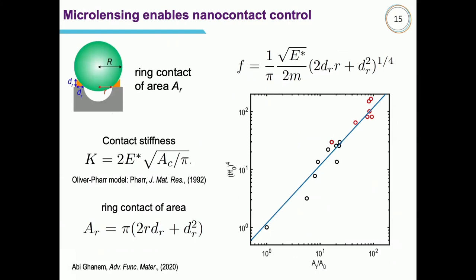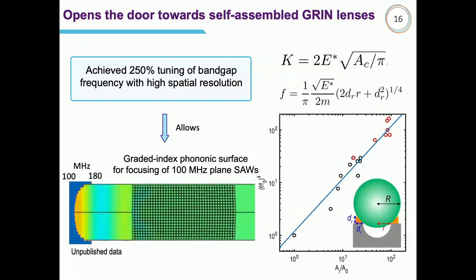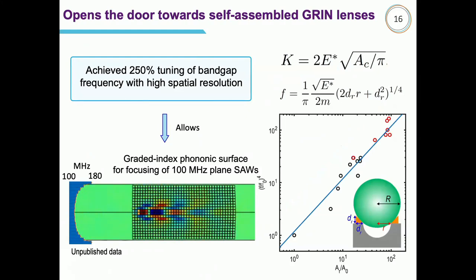This opens doors for locally tailoring self-assembled monolayers. By achieving this wide frequency shift via nano contact tailoring, we can create gradients on the surface and make ultrasonic lenses just by laser shaping. An unpublished simulation shows that by changing stiffness along a distance from 100 to 200 MHz, we can focus surface acoustic waves at 100 MHz with these gradient features.